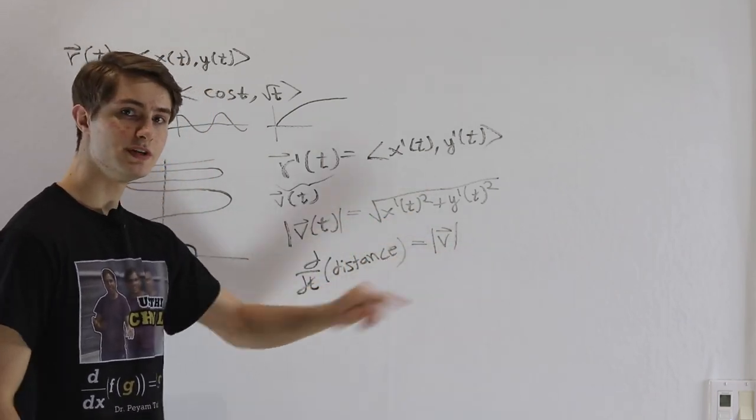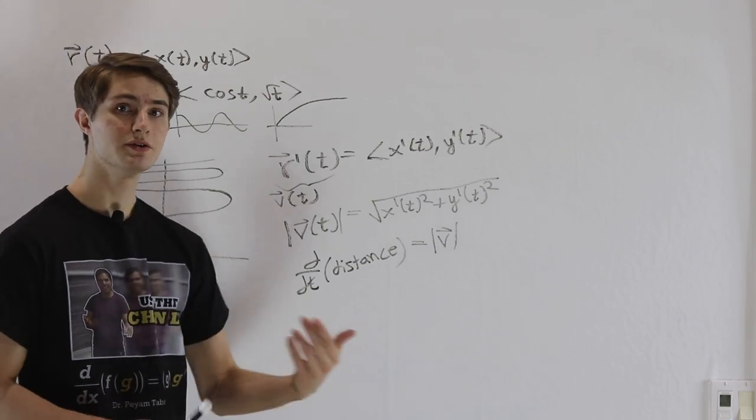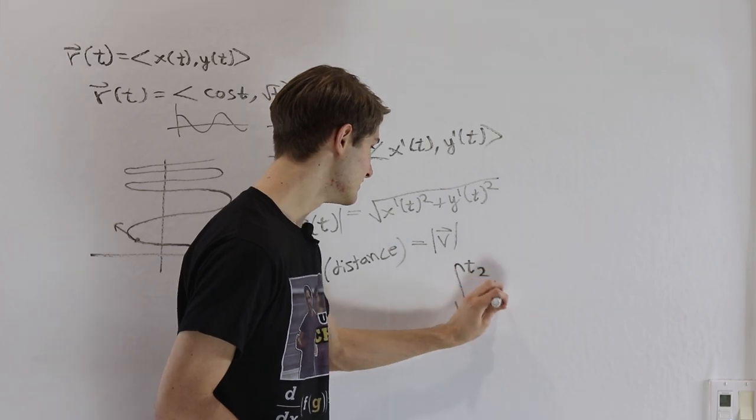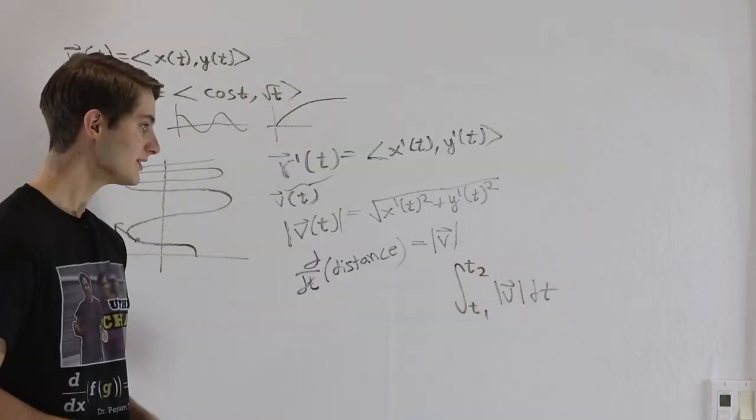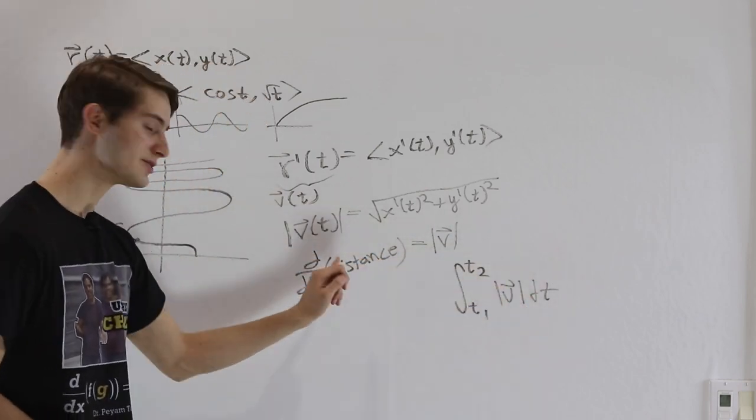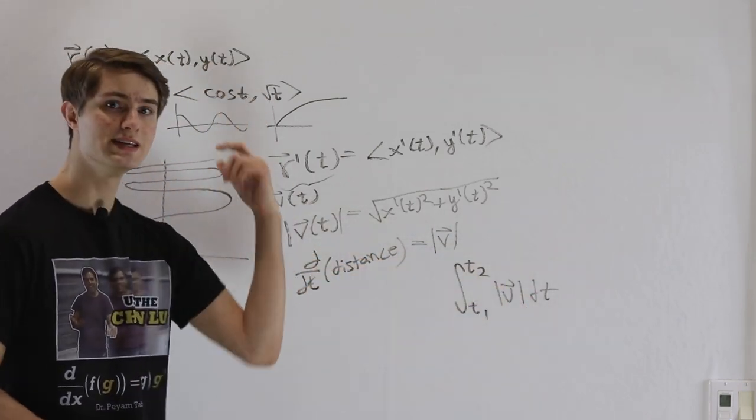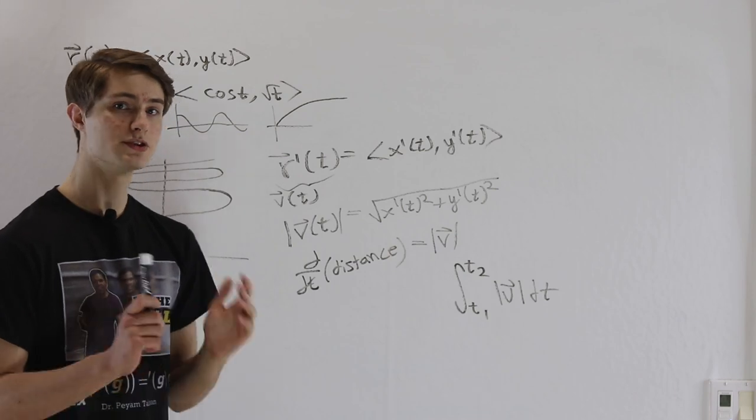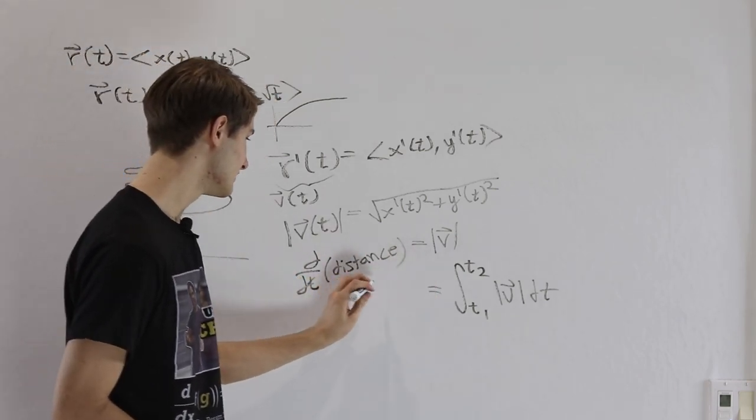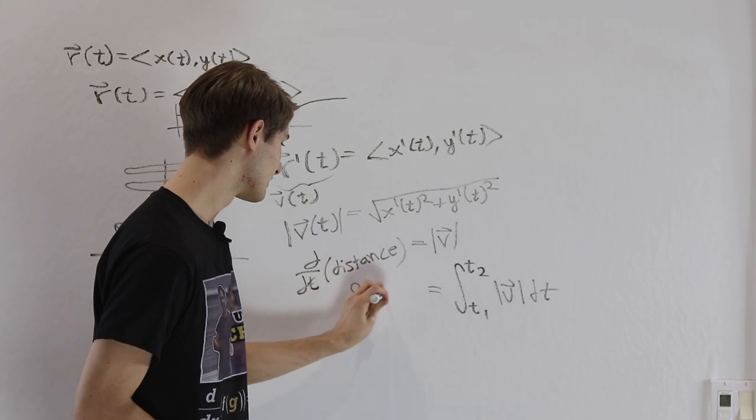So, if speed is the derivative of distance, then the way that we get the distance back is by integrating that derivative function. If we integrate speed with respect to time, that's going to give us our distance back because, remember, the integral of a derivative gives us back the original function. And, remember, distance is the same thing as arc length.